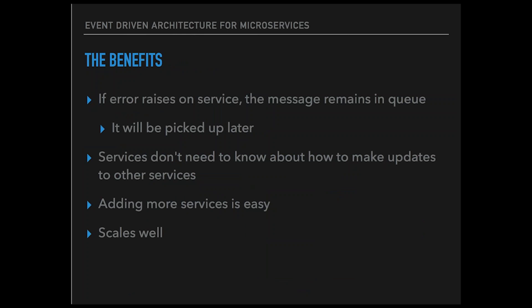The benefits we see with this architecture are: if an exception or error is raised on a service, the queue won't receive the acknowledgment signal, which means the message will be picked up later. For instance, if we're not able to deliver an email because a third-party service is not responding, it will simply be delivered whenever it comes back. Another benefit is that services don't need to know how to make updates to other services anymore, which means logic can be isolated to a single service. Adding more services becomes totally painless. And finally, it scales quite well.